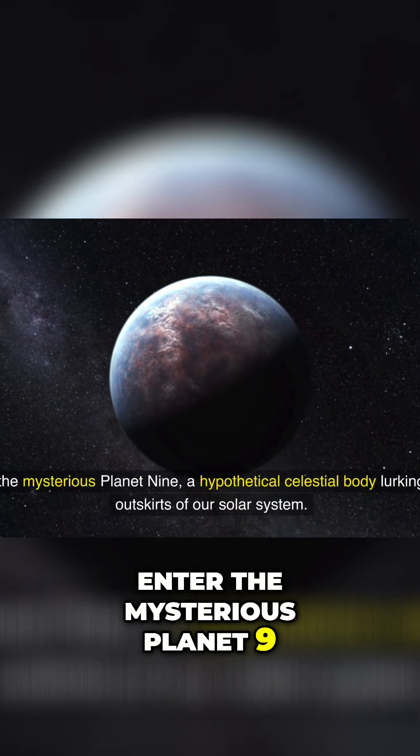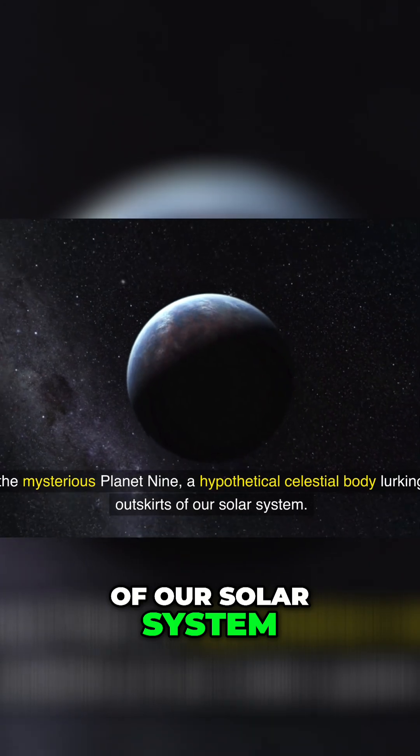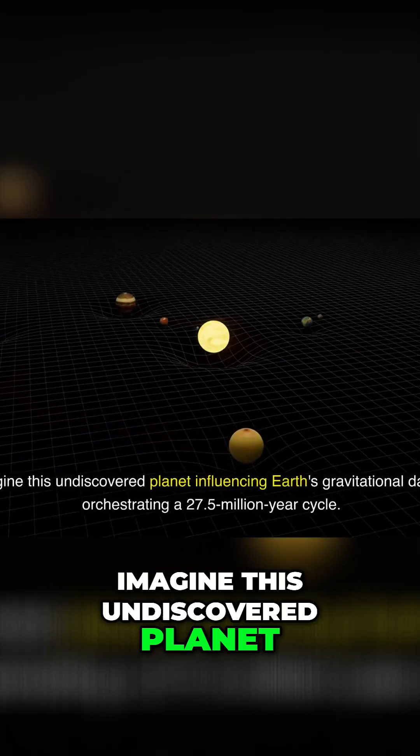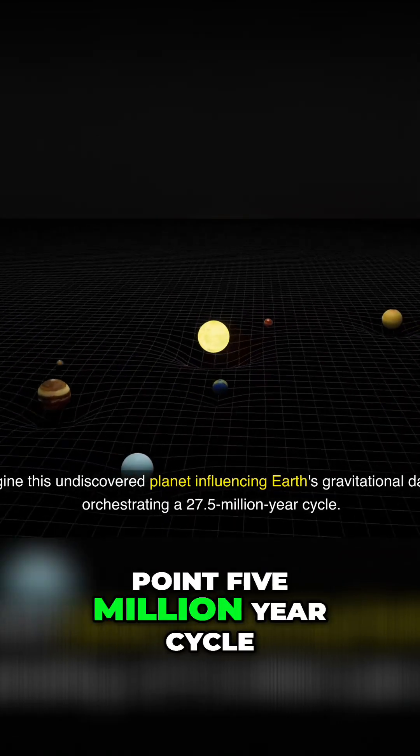Enter the mysterious Planet Nine, a hypothetical celestial body lurking in the outskirts of our solar system. Imagine this undiscovered planet influencing Earth's gravitational dance, orchestrating a 27.5 million-year cycle.